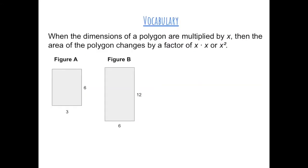When the dimensions of a polygon are multiplied by some number x, then the area of the polygon changes by x times x, or that number squared. For example, in figure A we have an area of 6 times 3, which gives us 18.